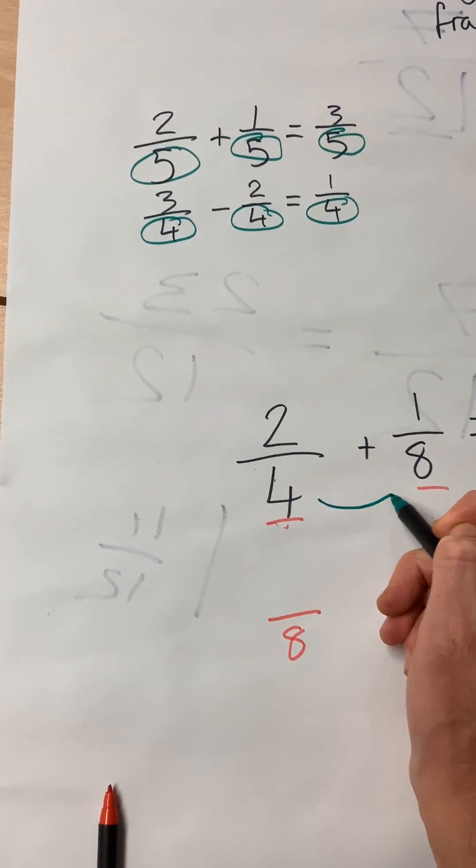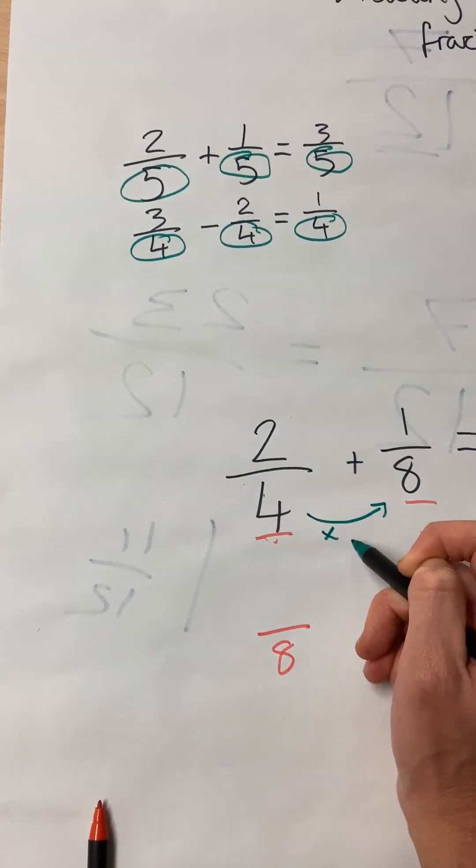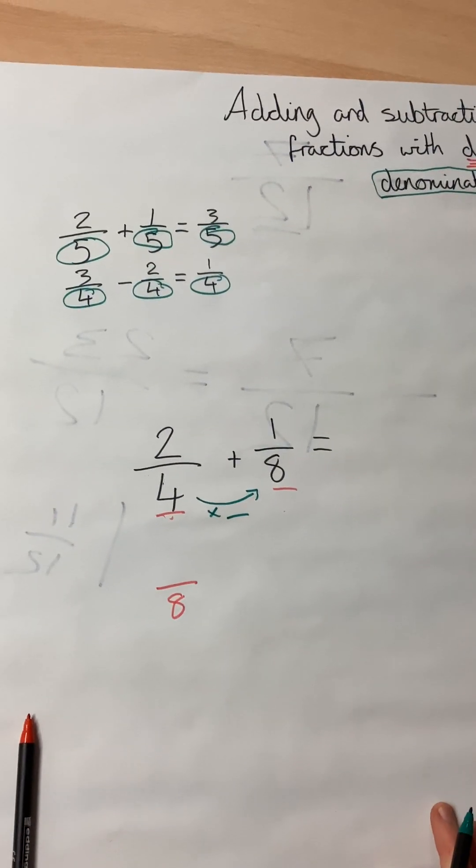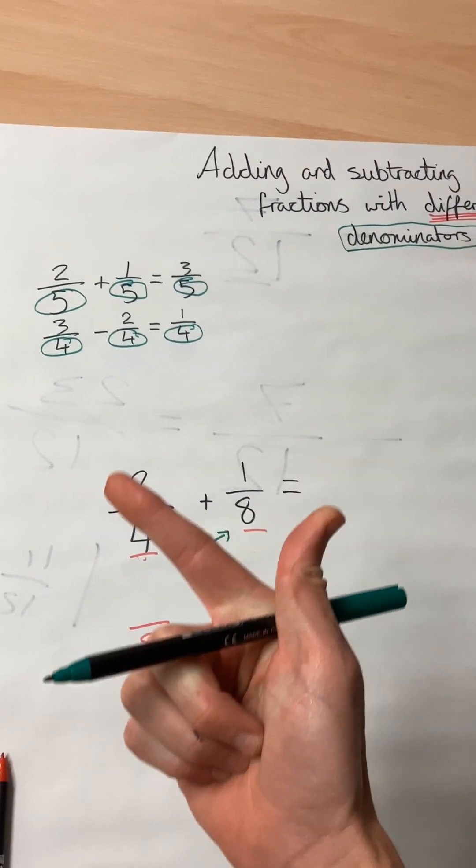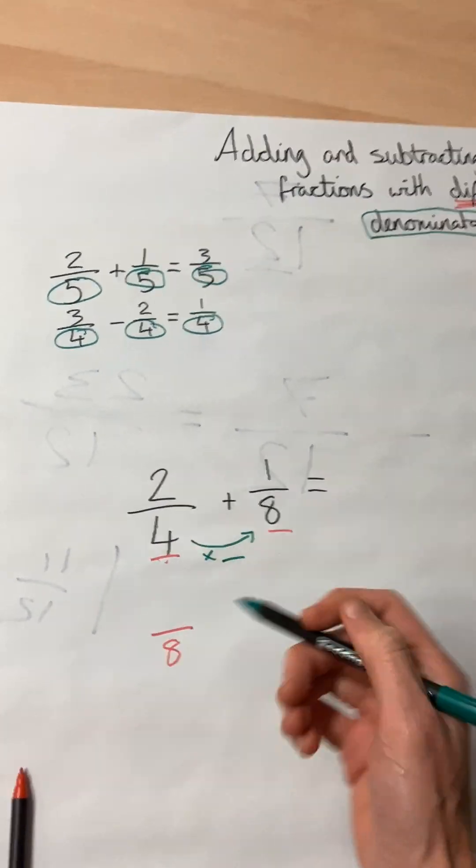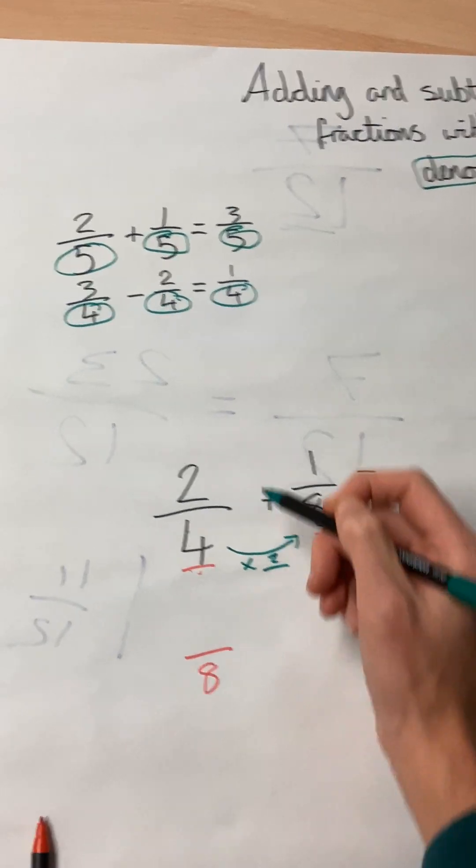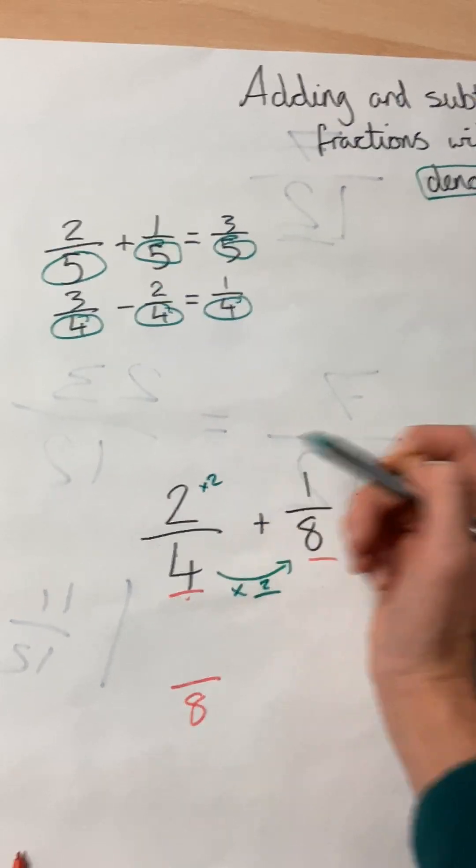So what do we need to multiply by to become eight? Four, eight. We need to times by two. So that means we need to times the top number by two as well.